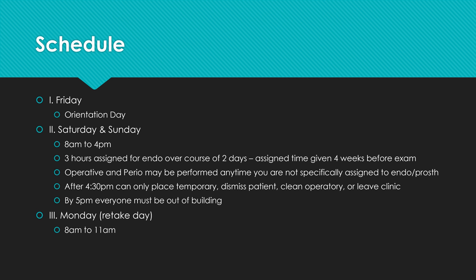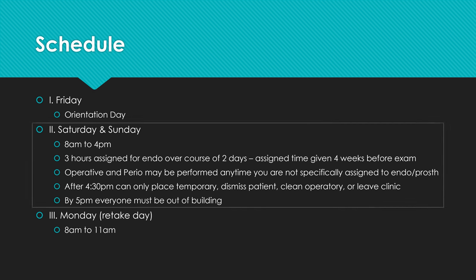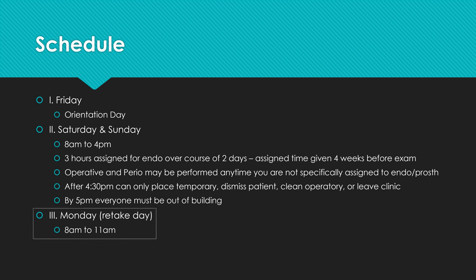The schedule has four official days. Friday is orientation — no dentistry done. Saturday and Sunday, you're there from 8am to 4pm. You'll have three hours assigned for the endo section sometime on Saturday or Sunday, and you'll find out a month beforehand — you can't switch it. Operative and perio can be performed any time between 8am and 4pm except during your endo block. After 4:30pm, you cannot submit anyone — you can only place temporary restorations, dismiss patients, clean operatories, or leave. You must be out of the building by 5pm. Monday is the retake day, with opportunities to retake sections from 8am to 11am.